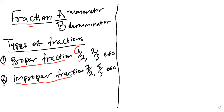And the second one, you can see two is lesser than three. So which means three can carry two — it can carry two on top of itself. So that's why it's called proper fraction. It's said to be proper because what is on top is lesser than what is on the bottom.